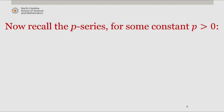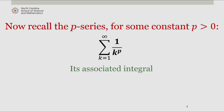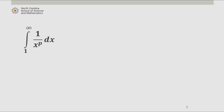Now consider the p-series for some constant p greater than 0. The series is defined as the sum from k equals 1 to infinity of 1 over k to the p, where p is some constant greater than 0, and its associated integral from 1 to infinity of 1 over x to the p dx. We can rewrite this as the integral from 1 to infinity of x to the negative p dx.